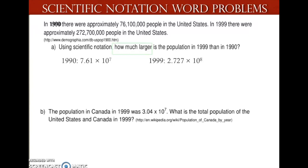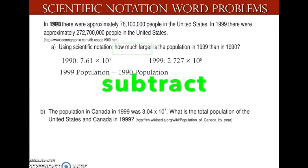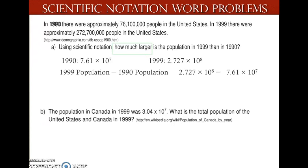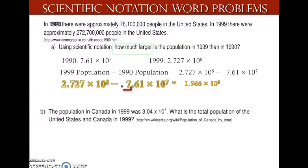Looking at this problem, we're going to subtract the 1990 population from the 1999 population. When we're subtracting in scientific notation, we need to make our exponents the same. You always want to make your exponent bigger, so I'm going to move my decimal one place to the left. When I subtract my two coefficients, it leaves me with 1.966 times 10 to the 8th power.